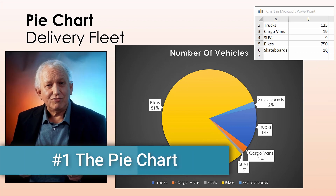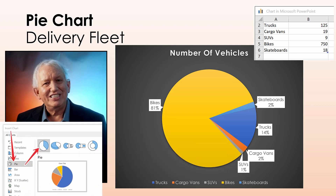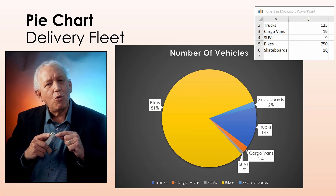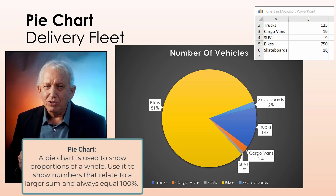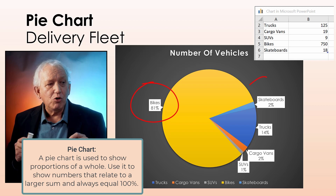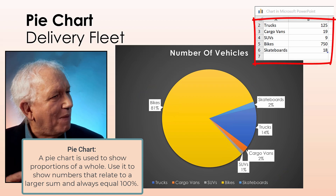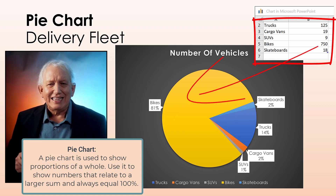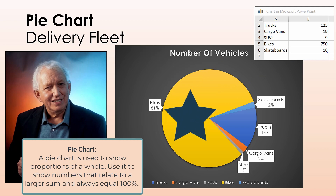Let's get started with the pie chart. The pie chart is excellent for understanding the relationship between data points. For our example, we're looking at a fictional package delivery company and the number of vehicles owned. The key is that we're looking at the proportional size of each type of vehicle as compared to each other — not the total number, but the relationship to the whole. Instantly, we see that they own way more bikes than any other category.